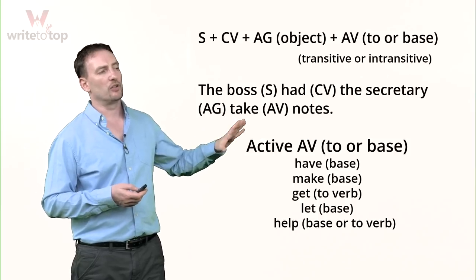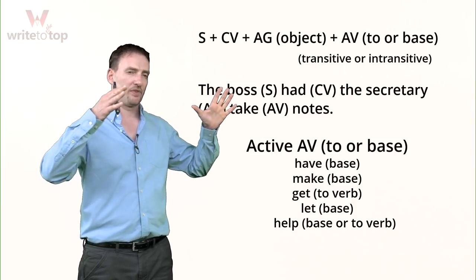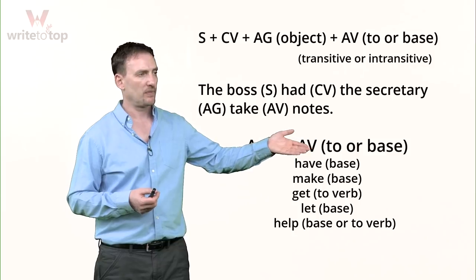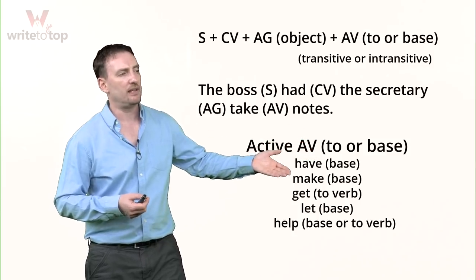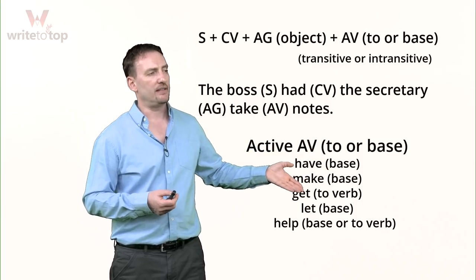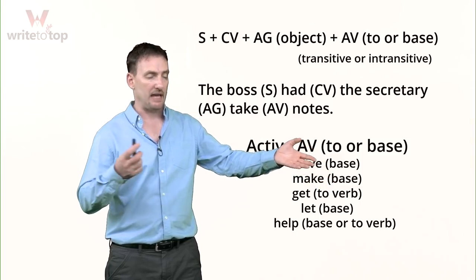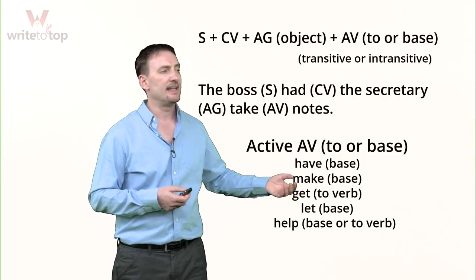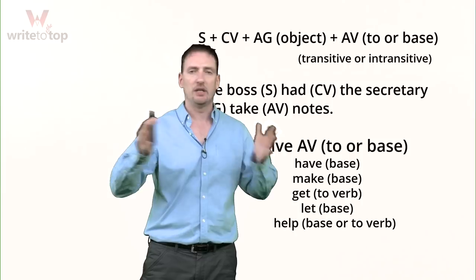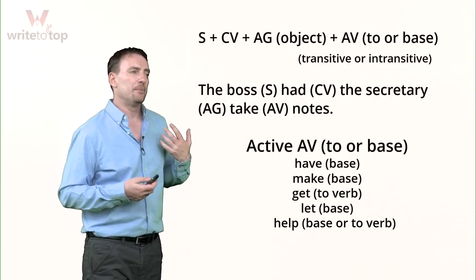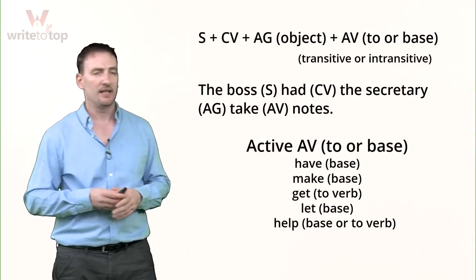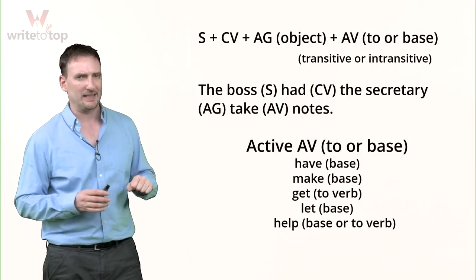Keep in mind we're looking at the active form right now. Have uses a base verb — the action verb is going to be base. With make, the action verb is also base. With get, you're going to have the infinitive (to + verb). With let, you use only the base. I also added help, because help can be followed by a base verb or an infinitive — there's no difference; use whichever you like.